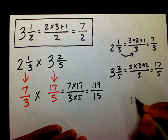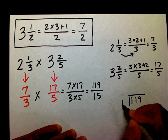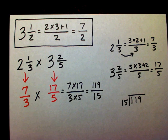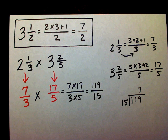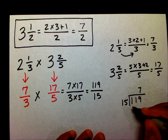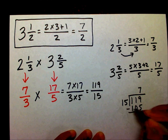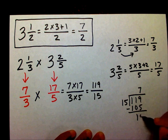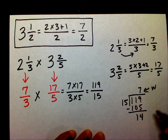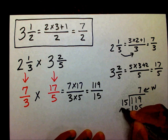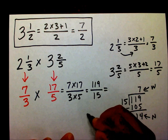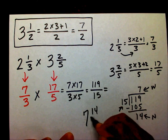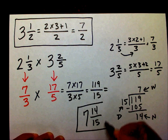So one hundred nineteen divided by fifteen — fifteen goes into one hundred nineteen seven times. Fifteen times seven is one hundred and five. Subtracting gives me fourteen. So here's my whole number, here's my numerator, and there's my denominator. My final answer is seven and fourteen-fifteenths.